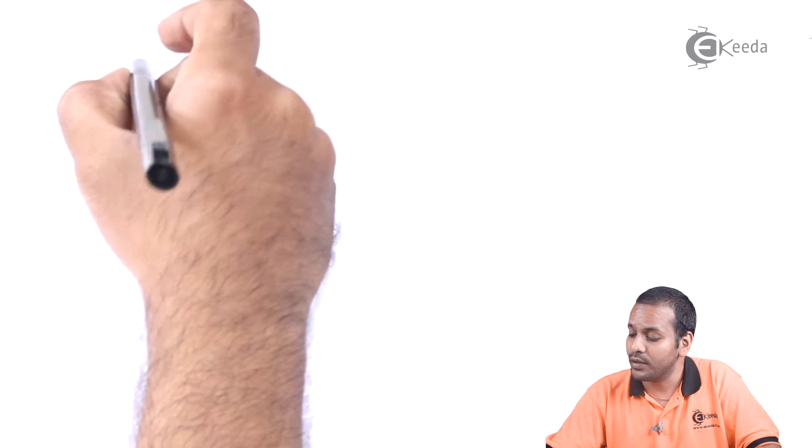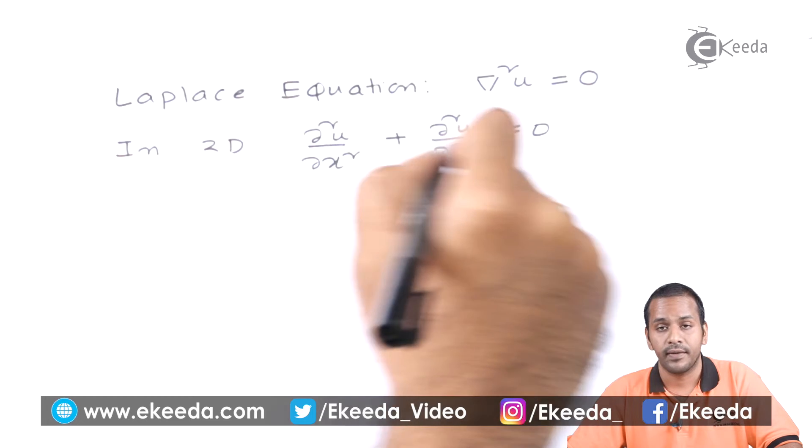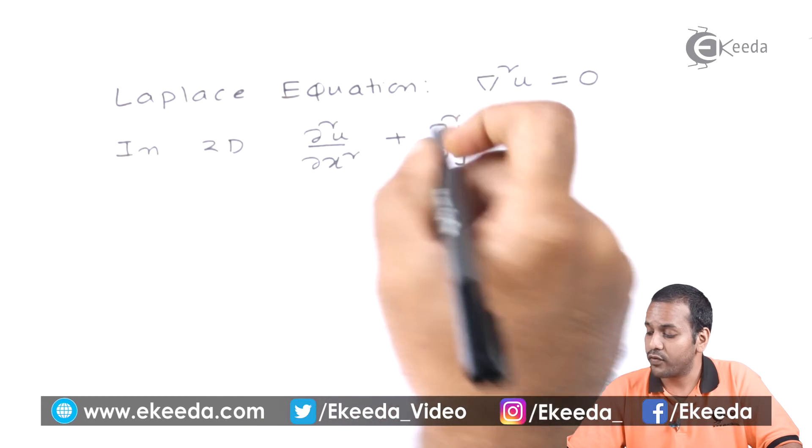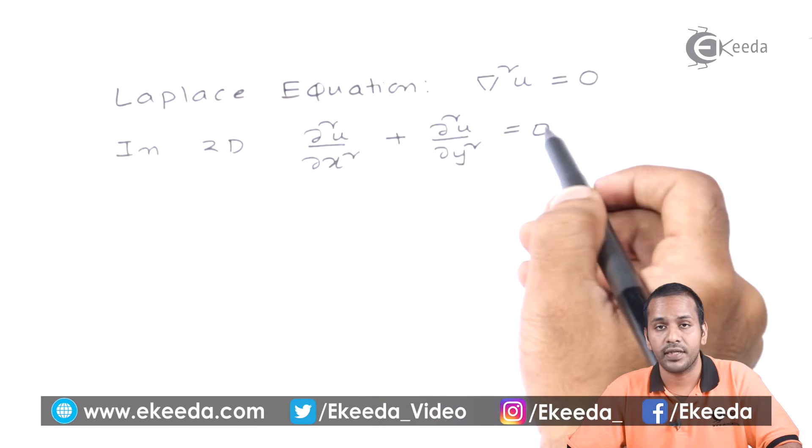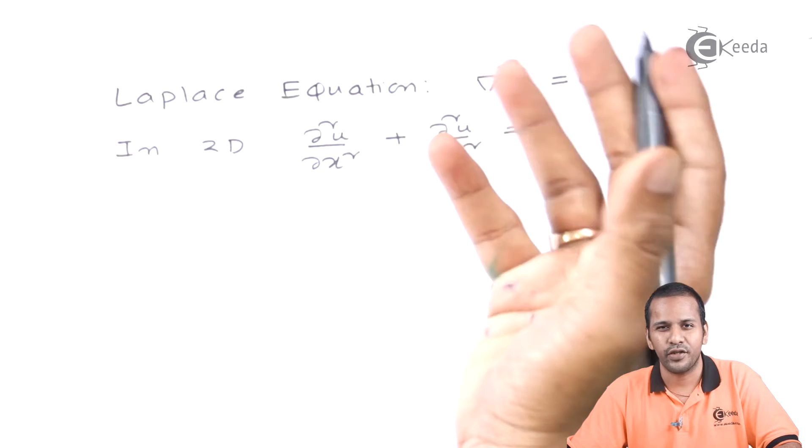Let's learn about boundary value problems. These problems deal with space. Let us take some famous example. In case of 2D, the equation looks like this: ∂²u/∂x² + ∂²u/∂y² = 0.